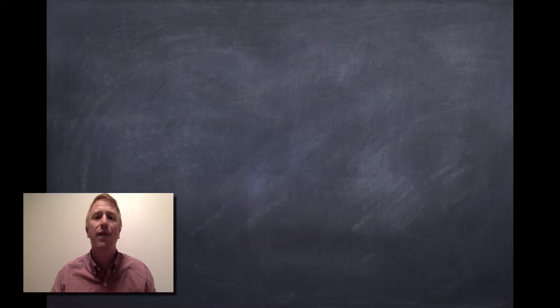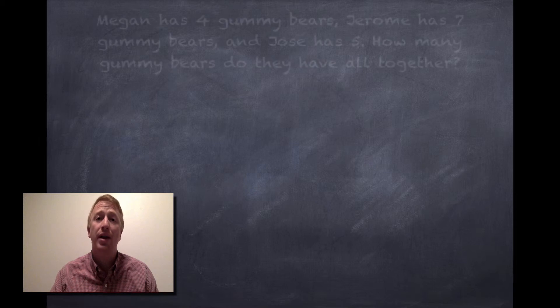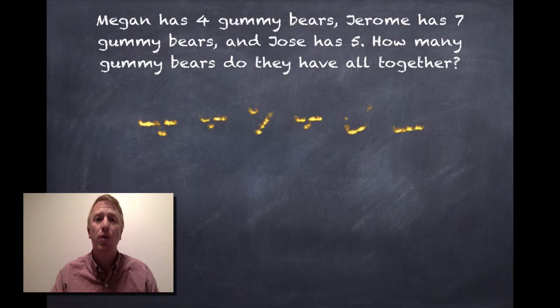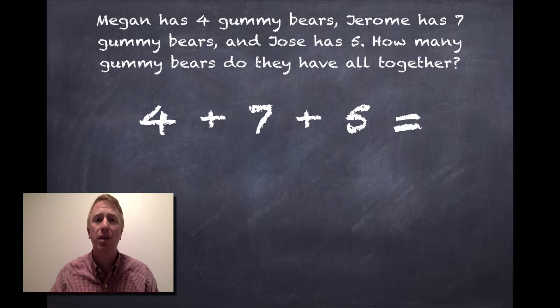Let's take a look at our final way of doing it. Now, this method is called the associative method. And it is a method for those of you that feel very confident in addition. Again, we're using the same problem of four plus seven plus five.